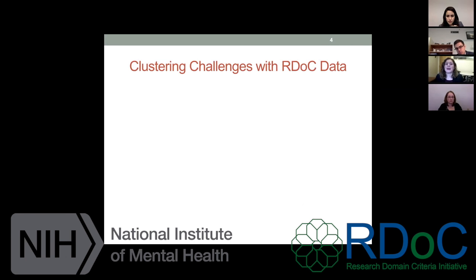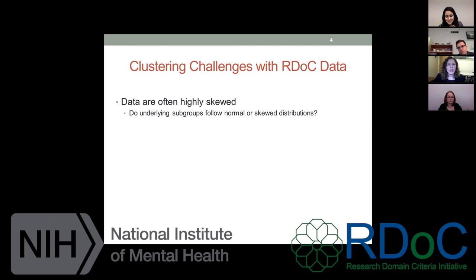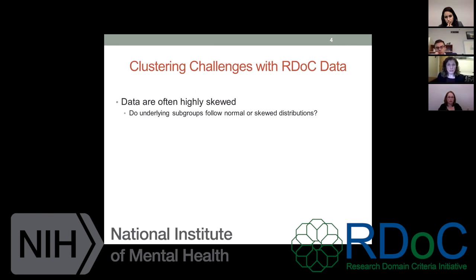Clustering can be a really frustrating methodology to use — there are a lot of challenges. When you have RDoC data these challenges are only enhanced. One of the things that makes RDoC data especially challenging is that the data are often very highly skewed. As an investigator, it's really important to think about whether you believe these variables would still be skewed even in an extremely homogeneous subsample, or alternatively whether the skewness you observe is actually a result of multiple normally distributed subsamples.